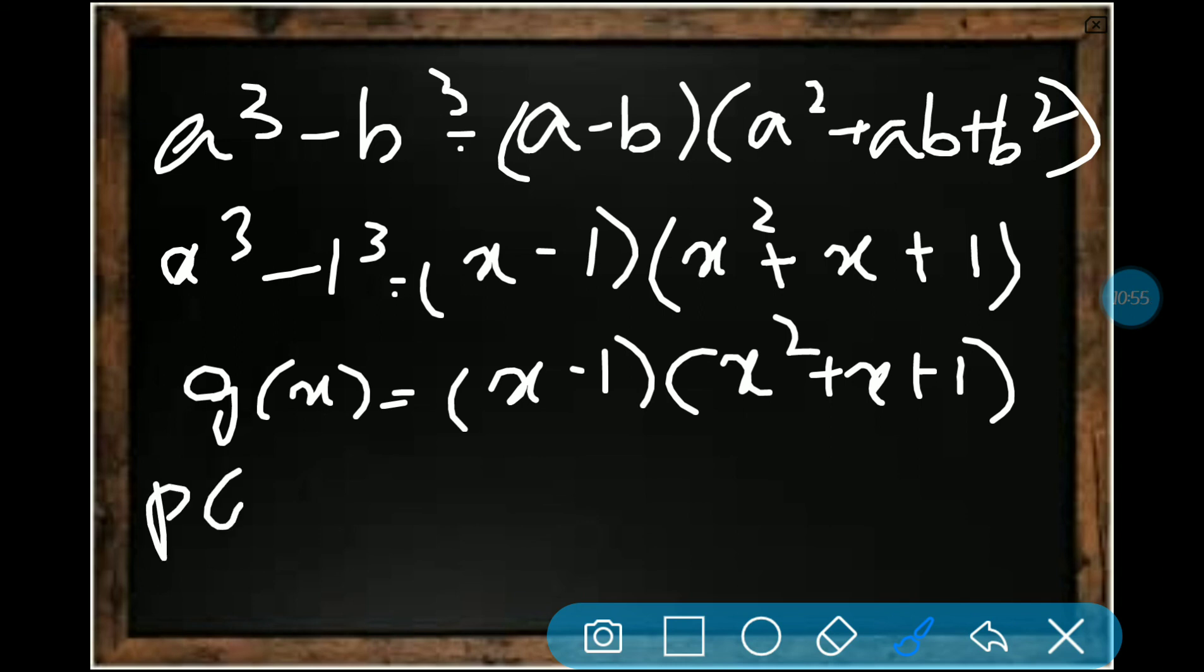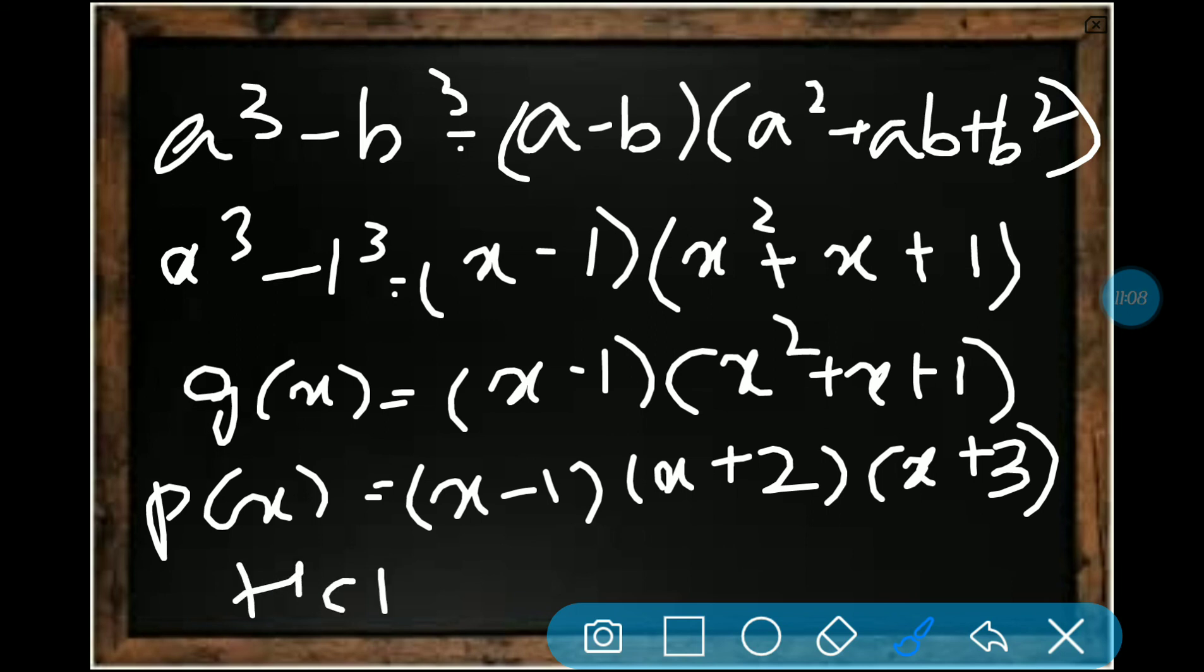We have g(x) = (x - 1)(x² + x + 1), and p(x) = (x - 1)(x + 2)(x + 3). The common factor we are having is x - 1. So HCF is x - 1, done. It's a lengthy problem, it took so much time. Take a screenshot.